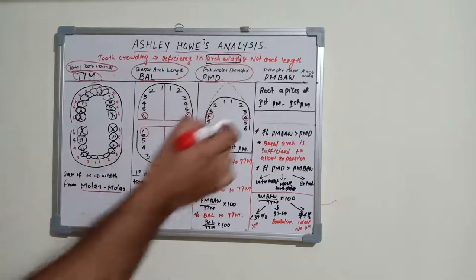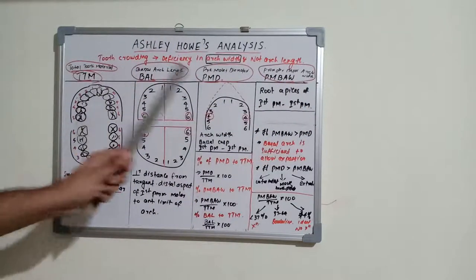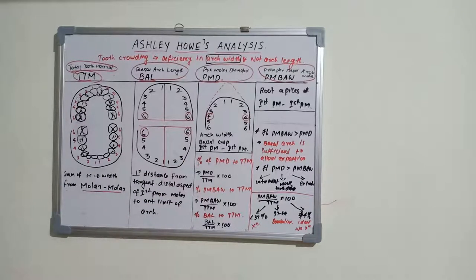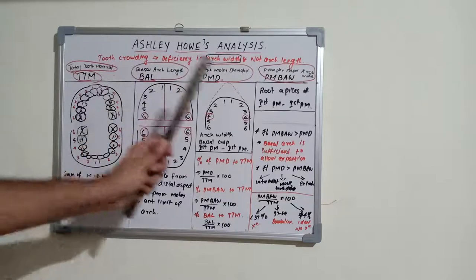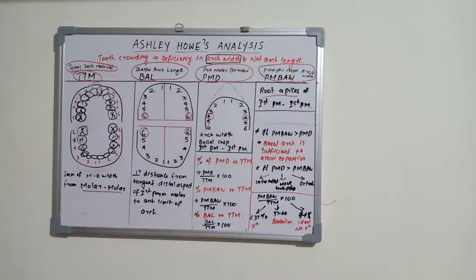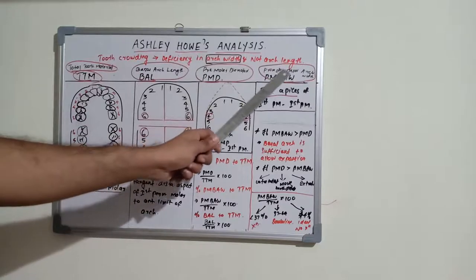The fourth parameter is premolar basal arch width (PMBaw). While the premolar diameter measures buccal cusp to buccal cusp, PMBaw measures the root apices of the first premolar to the first premolar on both sides. So buccal cusp width is the premolar diameter, and root apex width is the premolar basal arch width. These four parameters form the foundation of Ashley's analysis.